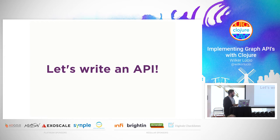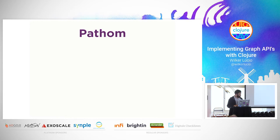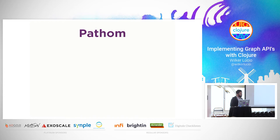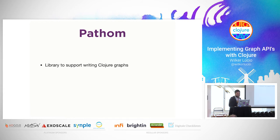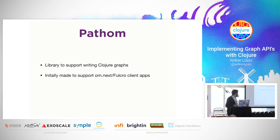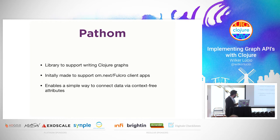After all this theory, I'd like to get more practical and see what happens when you take these ideas about long labels and information expansion and try to write an API around them. To do that, I'm going to use a library I've been writing called Pathom. It started as me working on Om Next and noticing things repeating themselves, so I isolated them into a library — something I used to copy and paste from project to project that eventually became an actual library. It supports Clojure graphs using the EDN pull syntax and these ideas. It's made for Om Next and Fulcro and enables a simple way to connect data.